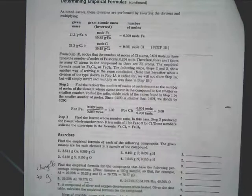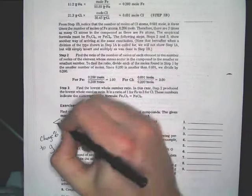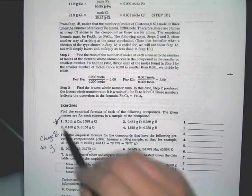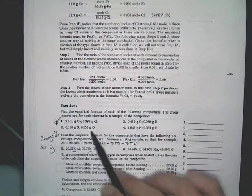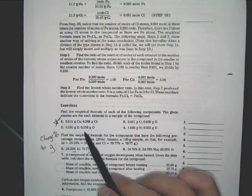Alright, so the empirical formula. Now notice, you look on your problem, number one. You've got 3.611 grams of calcium, 6.389 grams of chlorine.